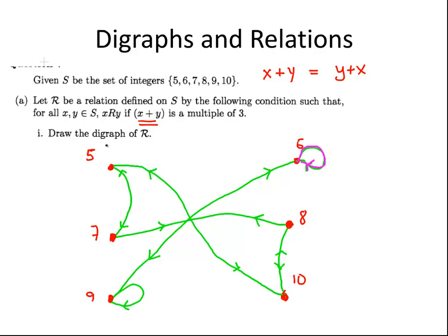For example, 5 would have an edge going from 5 to 5, like that. And so on for each of the 6 nodes. But that is not the case. So this is not reflexive.